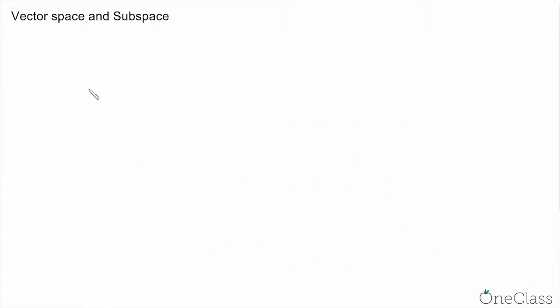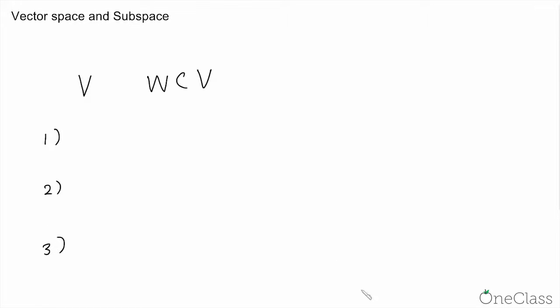Now that we have a basic understanding of what a vector space is, let's look at subspace. If we have a vector space v and we have a subset of v, called w, and if w satisfies the following three conditions, then we can say w is a subspace of v.